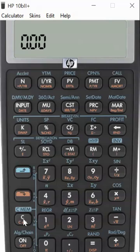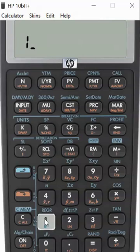To change this to 12 payments per year, press 12, then the shift down button and payment.